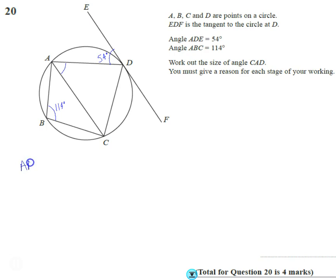I started by working out angle ADC, this angle here, which is 66 degrees. The reason I know that is because opposite angles in a cyclic quadrilateral are 180 degrees. We know it's a cyclic quadrilateral because it tells us A, B, C, and D are points on the circle. So we've used that piece of information, those two bits of information.